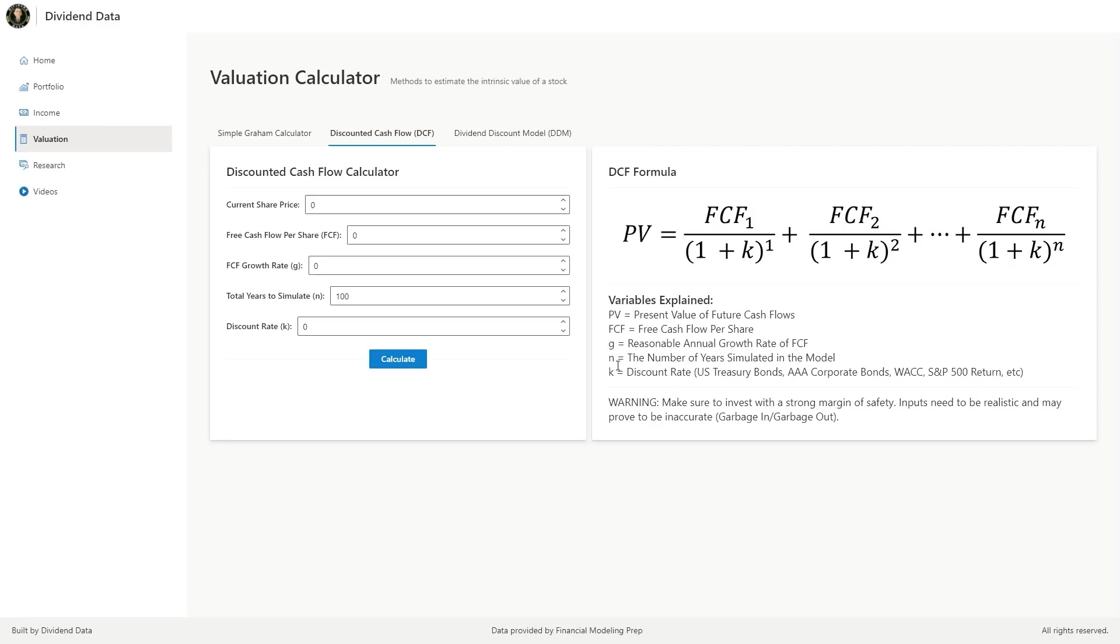N is the total number of years to simulate in the model. For a business, the number of years is theoretically forever or until the business no longer operates. Keep in mind that it becomes harder to predict over long periods of time because of so many unknowns. However, discounted cash flow is also used to value many different kinds of investments, not just businesses. In those cases, the number of years you project out can often be far more defined.